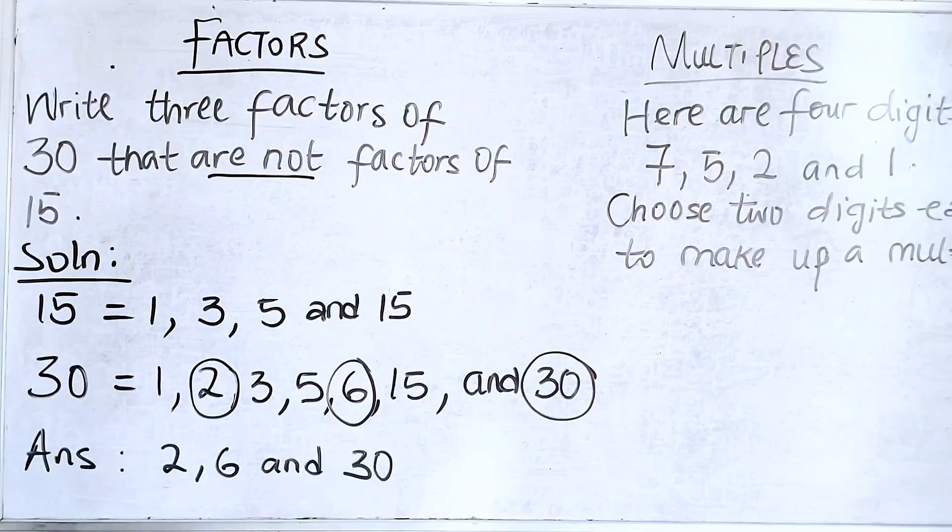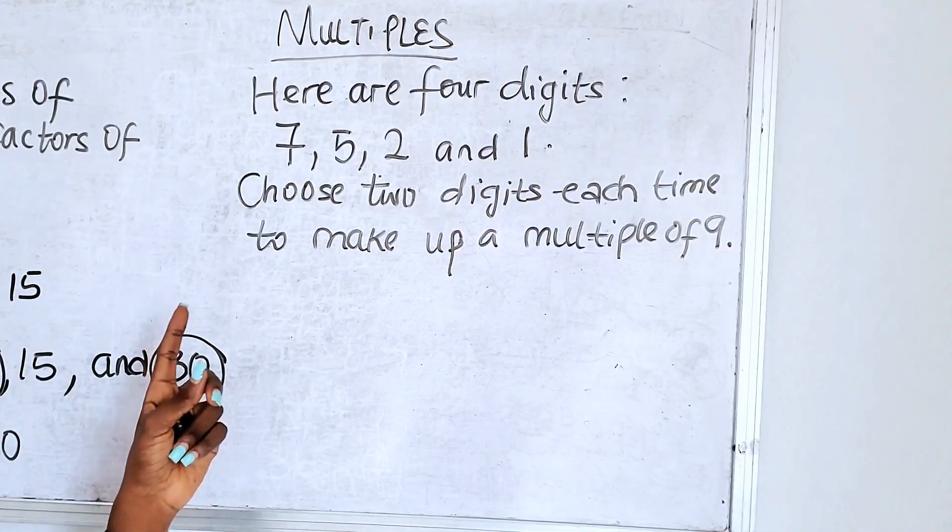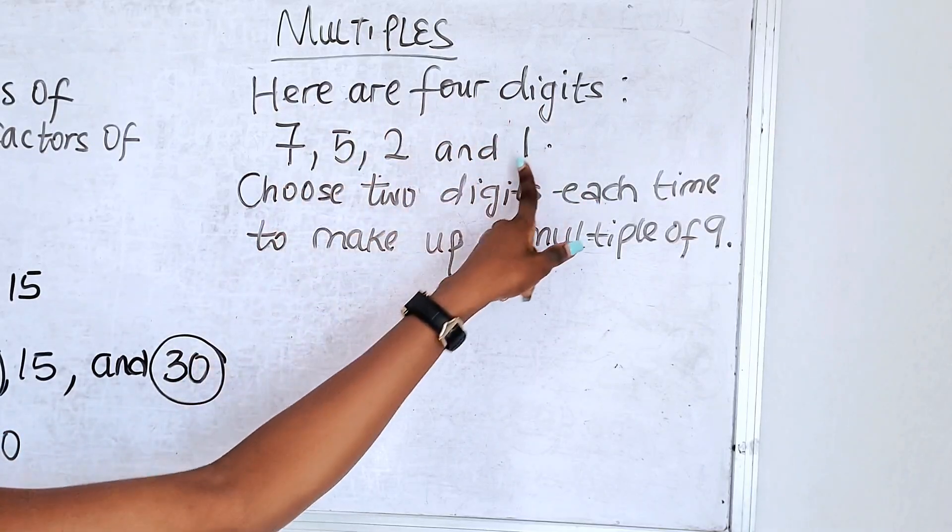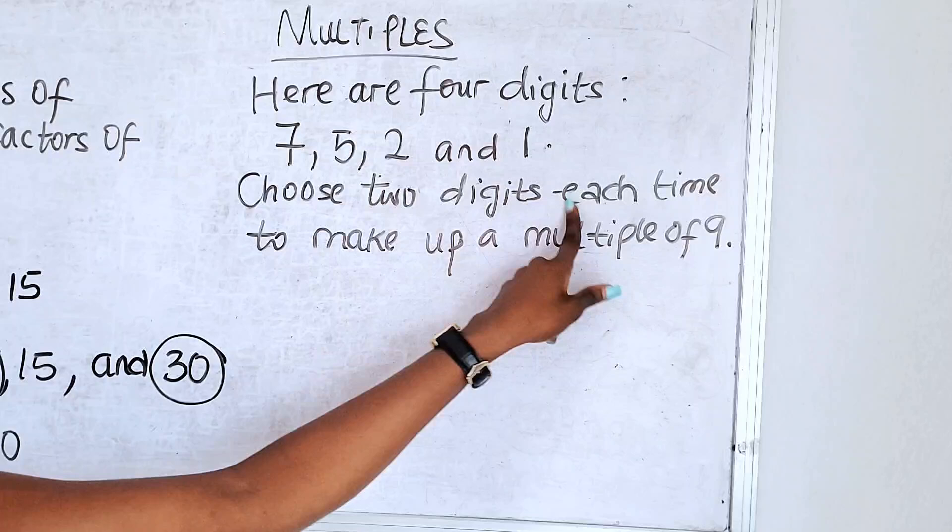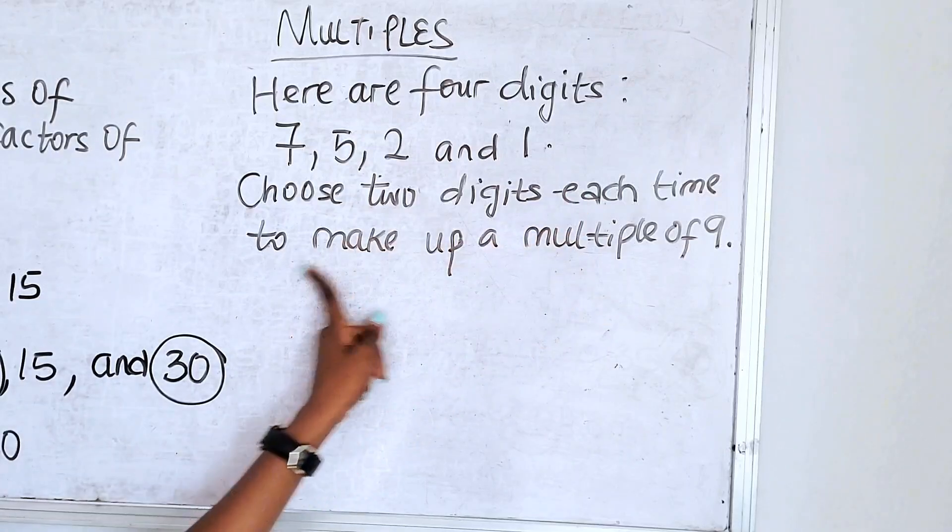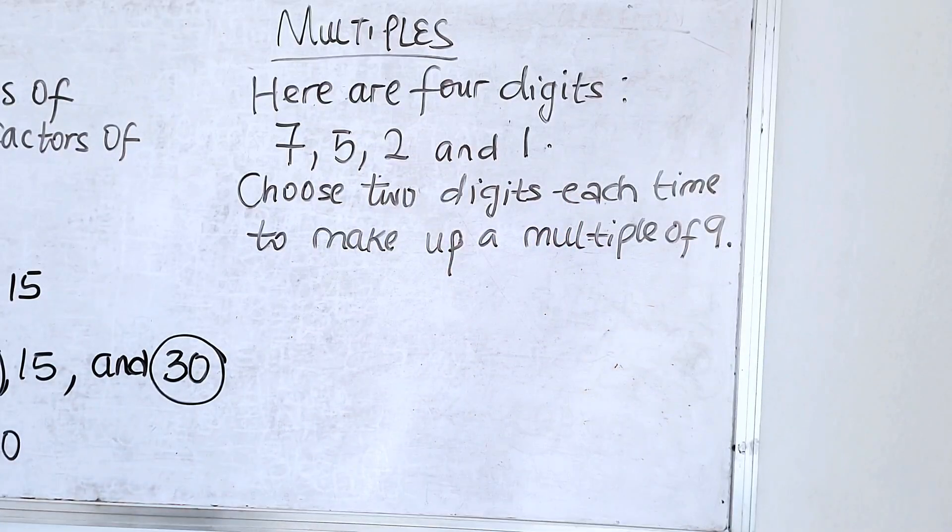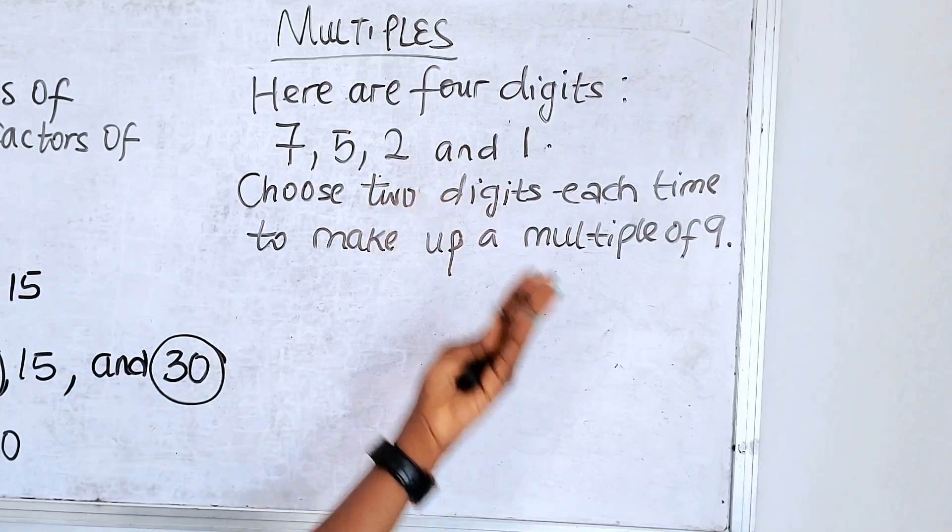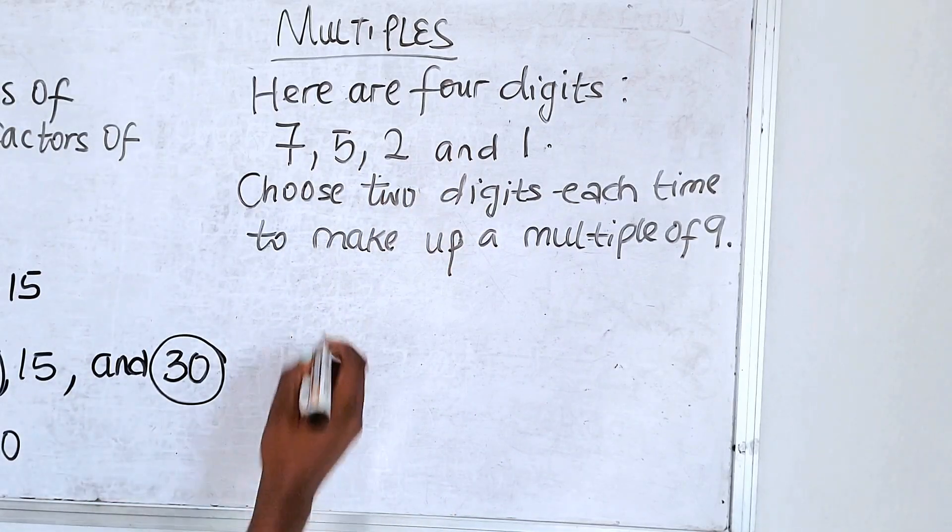Now let's move to the next question. So under multiples, we are given, here are 4 digits. These are the 4 digits. And we are asked to choose 2 digits each time to make up a multiple of 9. So what are 2 digits here that can make up a multiple of 9? Remember you have to know your multiplication table.